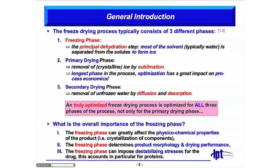The next step would be the primary drying phase, where we remove the already crystallized ice by sublimation. This is the general principle of freeze-drying. The longest phase is the primary drying phase, and therefore typically people optimize this phase to get more economic process conditions, to cut cycle time and save money.